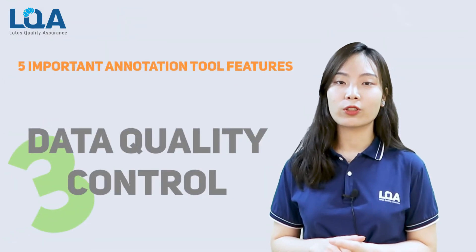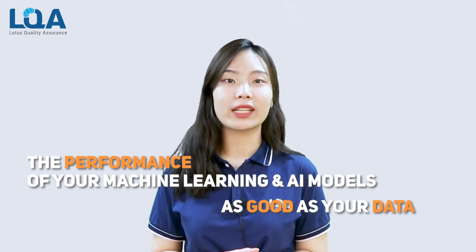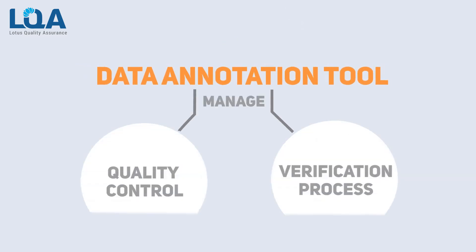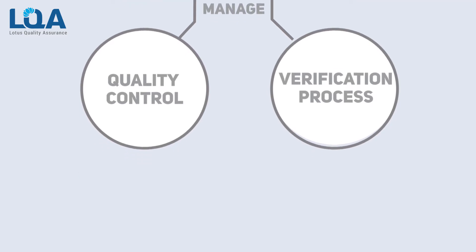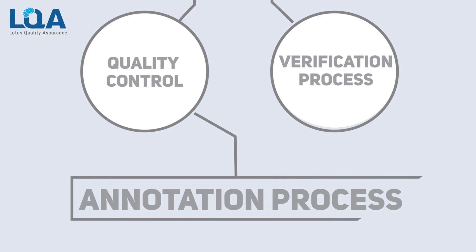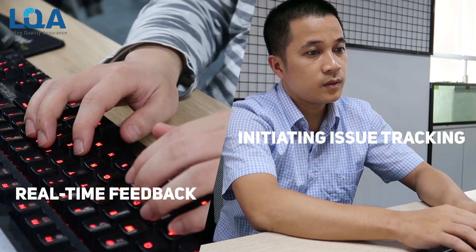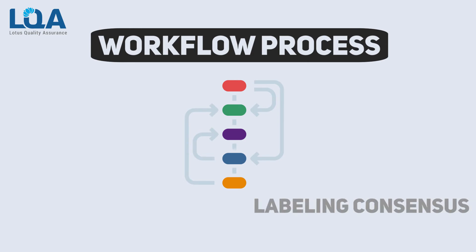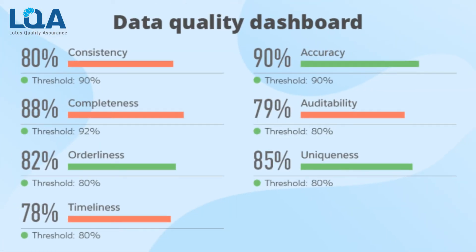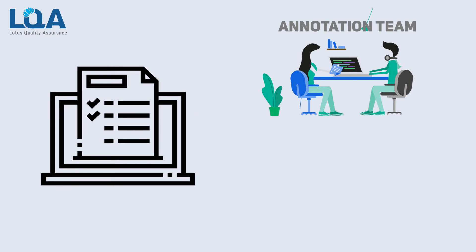Third, data quality control. The performance of your machine learning or AI model will only be as good as your data. A data annotation tool can help manage the quality control (QC) and verification process. Ideally, the tool will have embedded QC within the annotation process itself — for example, real-time feedback and issue checking during annotation. Additionally, workflow processes such as labeling consensus may be supported. Many tools will provide a quality dashboard to help managers view and check quality issues, and assign QC tasks to the core annotation team or a specialized QC team.